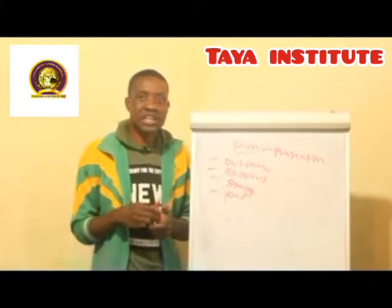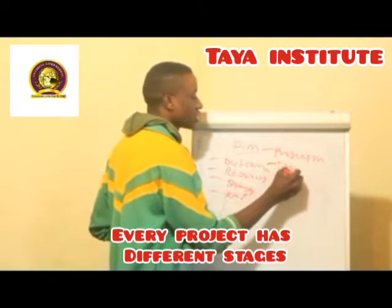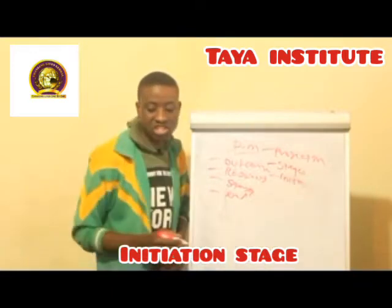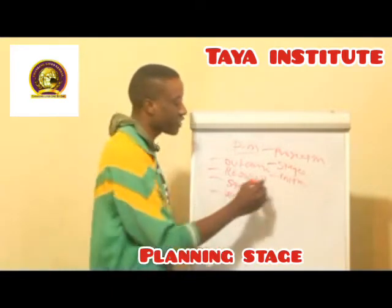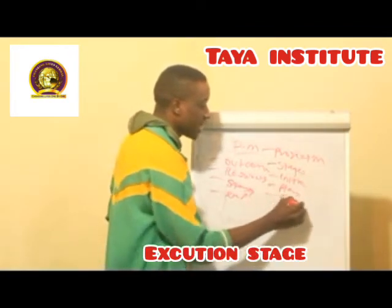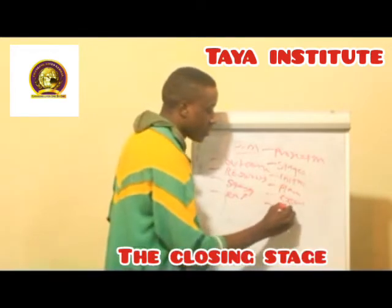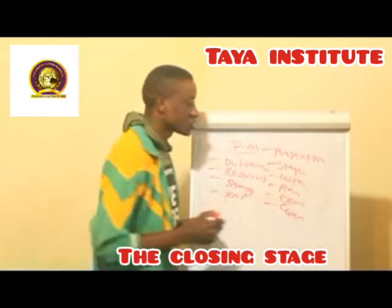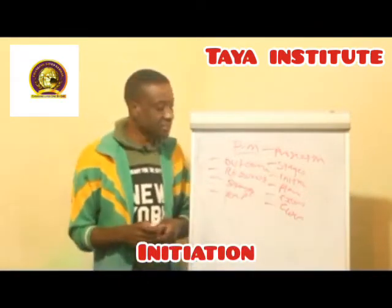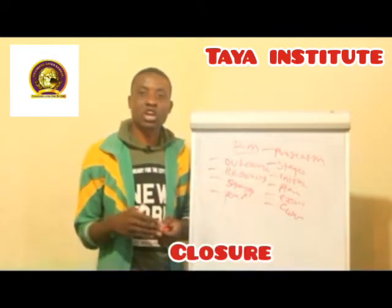In every project, there are different stages. The first stage is the planning. After planning, we have the execution stage. After execution, we have what you call the closure. So, every project has got different stages: the first stage is initiation, the second stage is planning, the third stage is execution, and the fourth stage is closing.